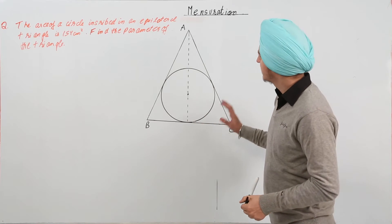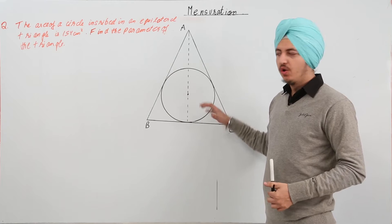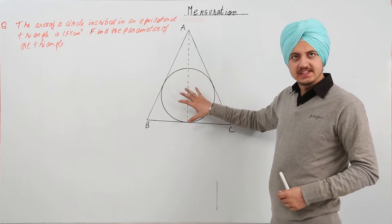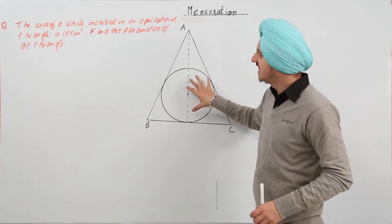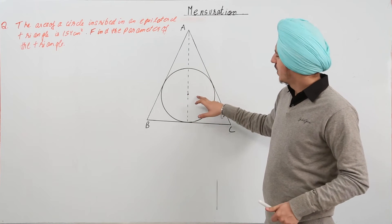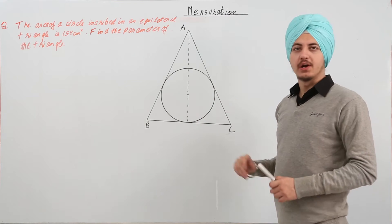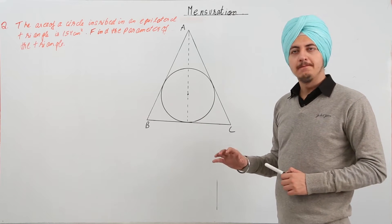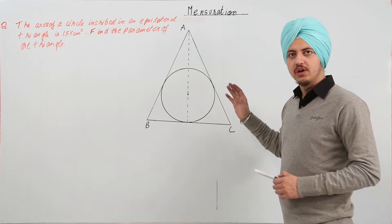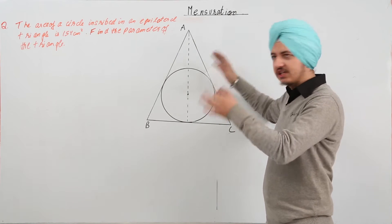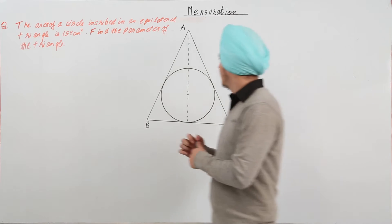The next question shows us a figure in which an equilateral triangle holds a circle inside it. We have the area of the circle inscribed in the equilateral triangle as 154 cm². We have to find the perimeter of the triangle, that is the sum of all the sides of the triangle.